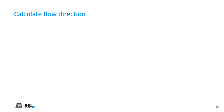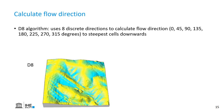The next step is to calculate the flow direction. Most often we use the D8 algorithm. Similar to the slope algorithm, it will look in a 3x3 window, and will calculate the slope to all the directions around the cell that we consider. But instead of assigning the slope, it will assign the direction of the steepest slope.